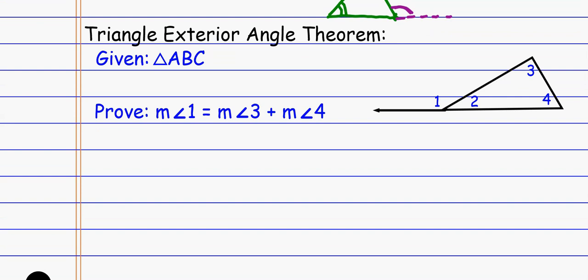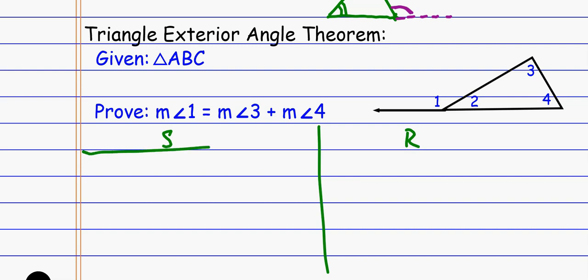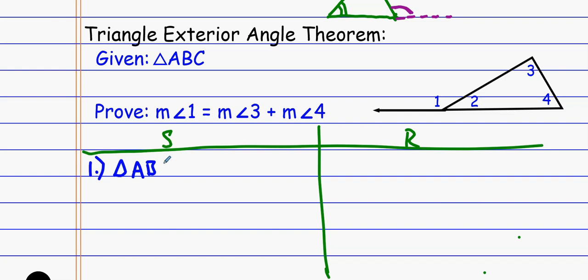The triangle exterior angle theorem basically says that the exterior angle equals the sum of the remote interior angles. I want to prove that the measure of angle one equals the measure of angle three plus the measure of angle four. Let's bust out our statements and reasons. This one is actually the easiest proof we'll do in a very long time. Let's start with what we know: triangle ABC is given.